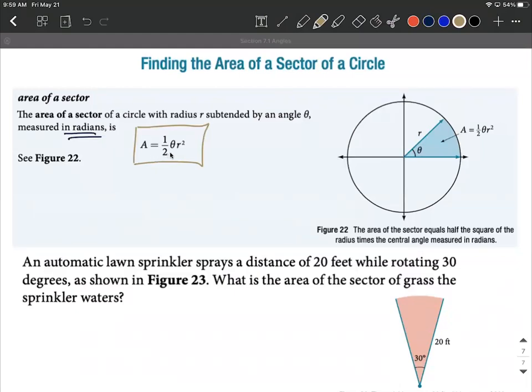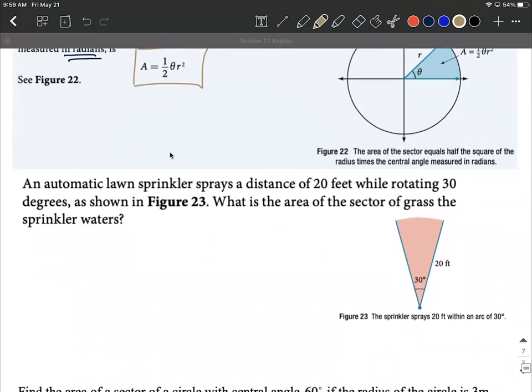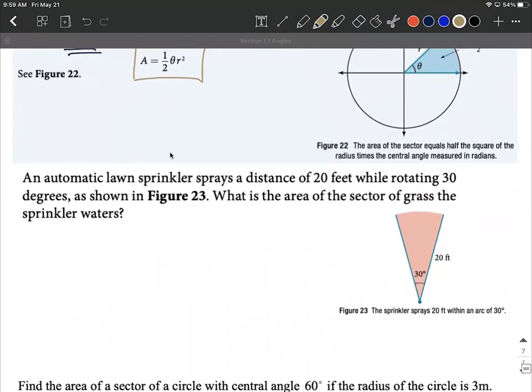So let's jump right in, use this a couple times, see some examples. We have an automatic sprinkler system sprays a distance of 20 feet, it goes 20 feet out from the center while rotating 30 degrees across here. What's the area of the sector of grass the sprinkler waters? Okay, so we're trying to find this area.